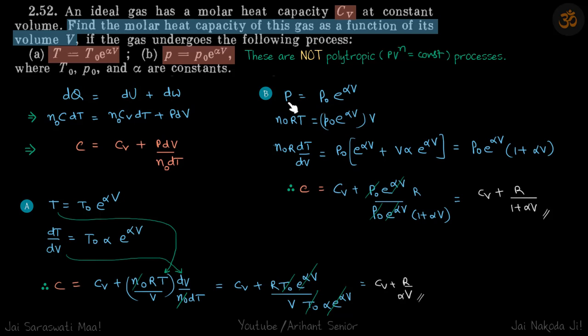Second part. So now we have an equation in pressure and volume. Again, because we need the term of dV by dT, we are going to turn that equation into the variables of volume and temperature. So pressure we'll write in terms of temperature and volume, so now we get the value of dT by dV.